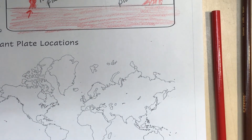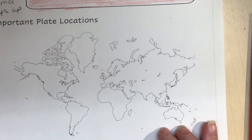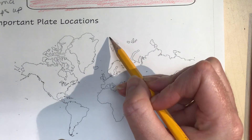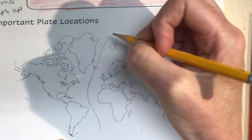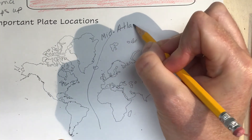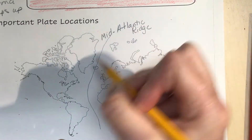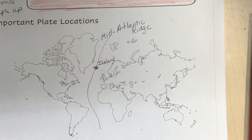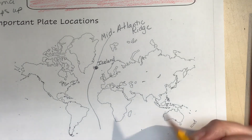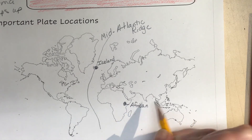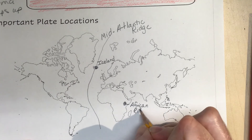You need to know some important plate locations because the AP test often has a map. You don't have to memorize all the plates, but you need to know a few key locations. First, down the middle of the Atlantic Ocean is the Mid-Atlantic Ridge — it passes through Iceland, which is one of the only places you can see the Mid-Atlantic Ridge on land. Another divergent plate boundary is the African Rift Valley, where two plates are being pulled apart and create a big rift down the middle.